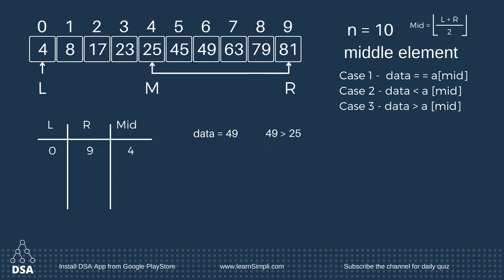In the beginning the search space was the full array. After comparing and finding the middle value, we have decreased the search space to half. Now the left variable will be moved, and L becomes mid plus 1.